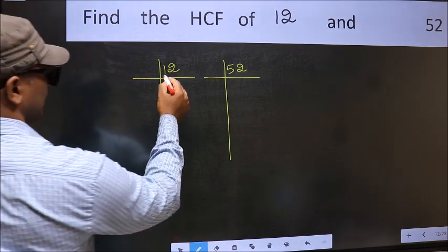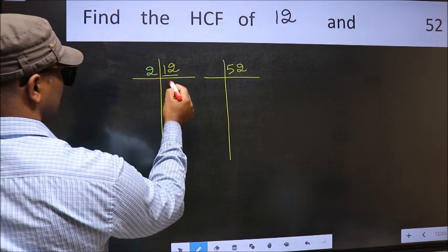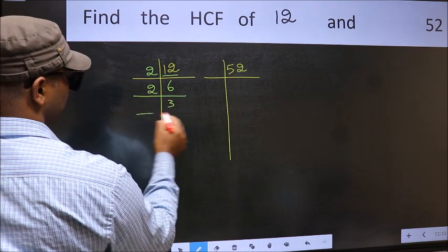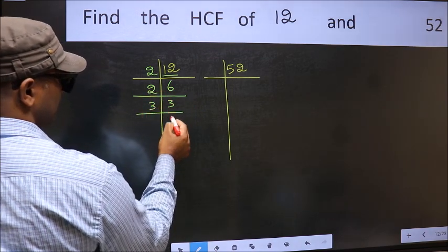Now, here we have 12. 12 is 2 times 6. 6 is 2 times 3. 3 is a prime number, so 3 times 1 is 3.